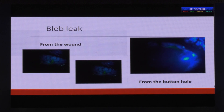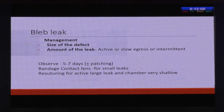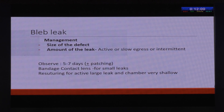In early hypotony, the most common cause is a bleb leak. The bleb leak could be either from the wound or because of a buttonhole in the conjunctiva. The management of a bleb leak depends upon the size of the defect and the amount of the leak — whether it is active, a slow egress, or an intermittent leak.